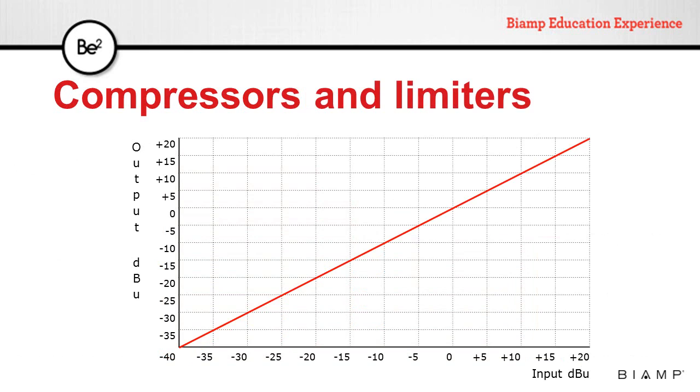We can better explain how a compressor works with a dynamic response graph. This graph represents the output level versus the input level. The diagonal line represents a unity gain device where at any input level, the output will have the exact same level.